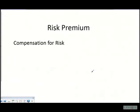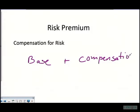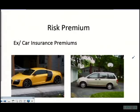When we're looking at a risk premium, we're talking about compensation for risk. This is the additional compensation that we receive above a base. So we're basically going to have a base case and then we add on to that compensation.